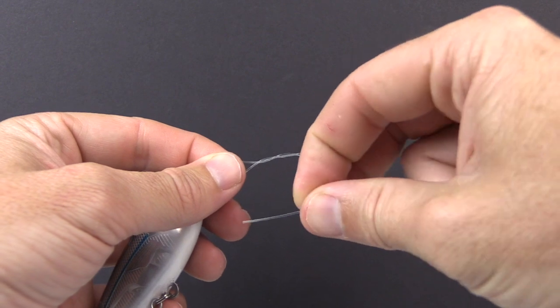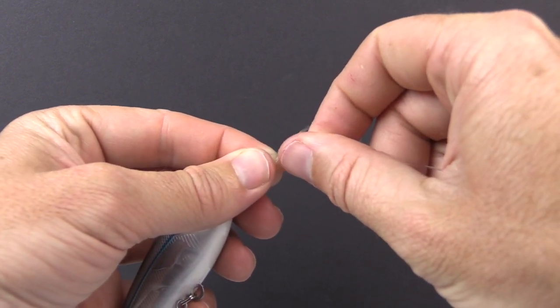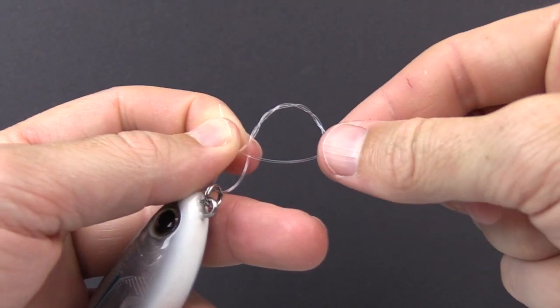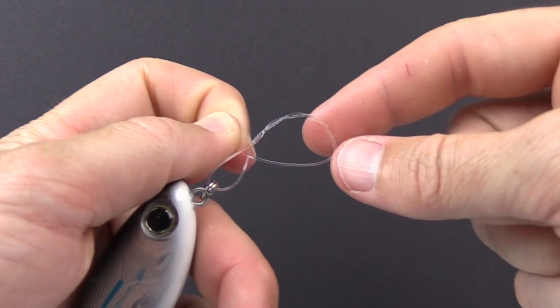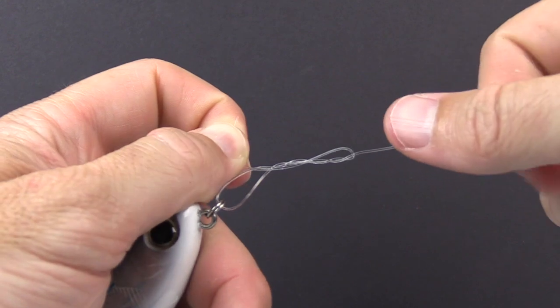So now with this little gap that we've kept open, we take the tag end and thread it through that little gap and I'll get my fingers out of the way so you can see what's happening. So again just have that little gap that went around the main line five times and then went back through the gap.